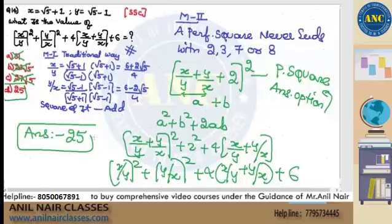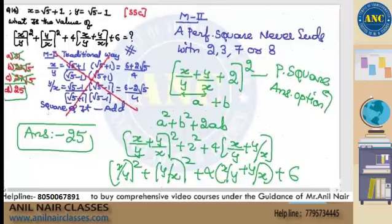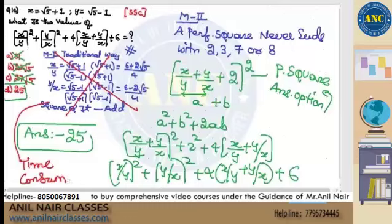A perfect square never ends with 2, 3, 7, or 8. So this equation is nothing but (x/y + y/x)², a perfect square. The traditional rationalization method — kindly avoid it. It is time-consuming. You will get the answer step by step, but you are not playing the game to win; you are just playing to score.